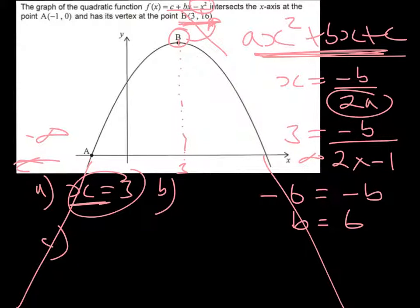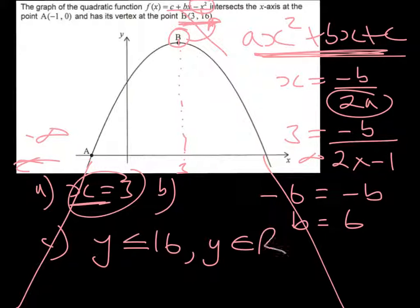Therefore the range y must be either less than or equal to 16. It cannot be more than 16. So the range will be y ≤ 16, and we can say that y is an element of the real numbers, because there are no restrictions on whether it's got to be integers or anything else.